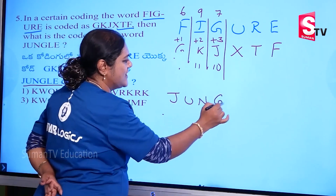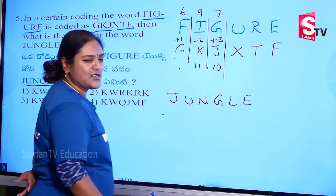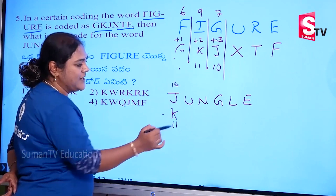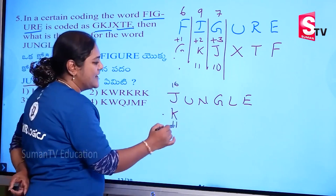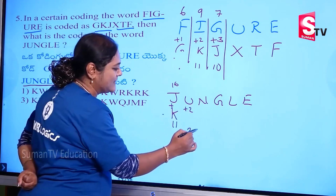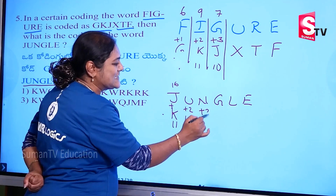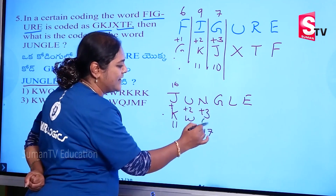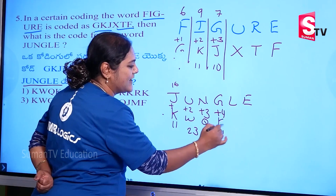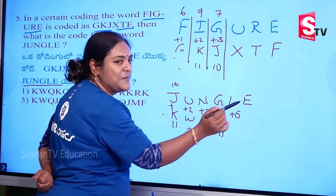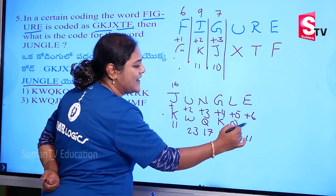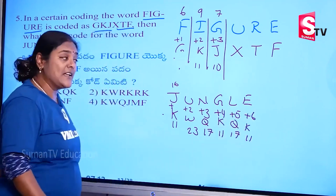G, U, N, G, L, E — jungle code. Okay: 10 plus 1 = 11; next 20 plus 2 = 22... 21 plus 2 = 23; and W — 14 plus 3 = 17, Q; plus 4 — 7 plus 4 = 11, K; then plus 5 — 12 plus 5 = 17, Q; then 5 plus 6 = 11, K. Only 3.